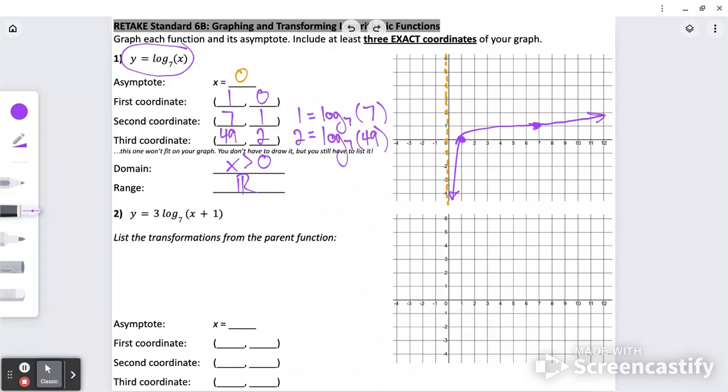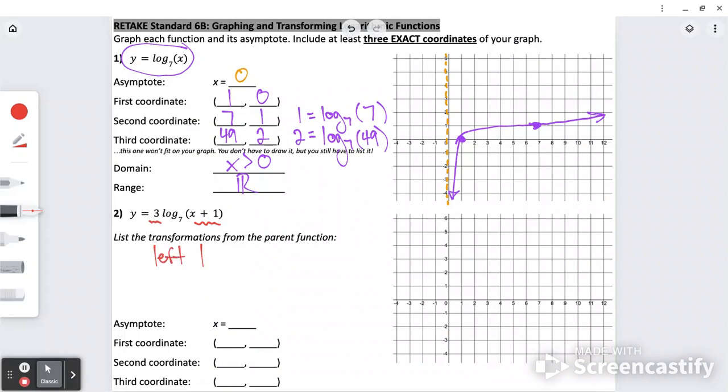To do the next one, part of this is knowing some of the memorized transformations that we've learned. The number added or subtracted on the inside will move it left or right. When it's a plus one, it moves left one. The number on the front is a vertical stretch. If it's a whole number, it'd be a shrink if it were less than one like a fraction, but here it's a vertical stretch of three.